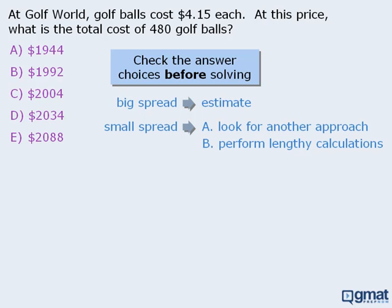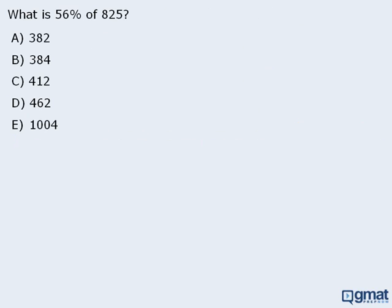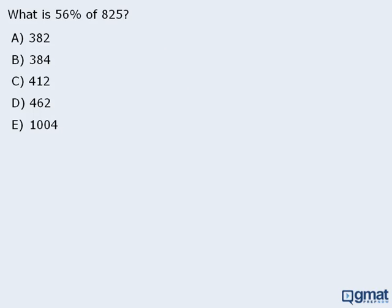The good news is that there is almost always an approach that does not rely on lengthy calculations. Your job is to learn these approaches before test day. Now let's look at some other questions. In school, you learned that to find 56% of 825, you can either multiply 0.56 by 825, or you can multiply 56 over 100 by 825. Now of course, both of these options require somewhat lengthy calculations, so there's probably an easier and faster approach here.